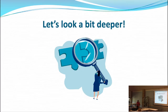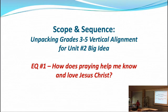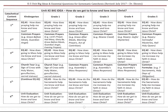So as they do with the kids, let's look a little bit deeper about this. The scope and sequence for unpacking grades three to five — vertical alignment. EQ one: How does praying help me know and love Jesus Christ? This is going to show you an example. 'How do we get to know and love Jesus Christ' is a Unit 2 big idea, and praying would fall under that unit logically — because praying is how you get to know and love Jesus Christ.